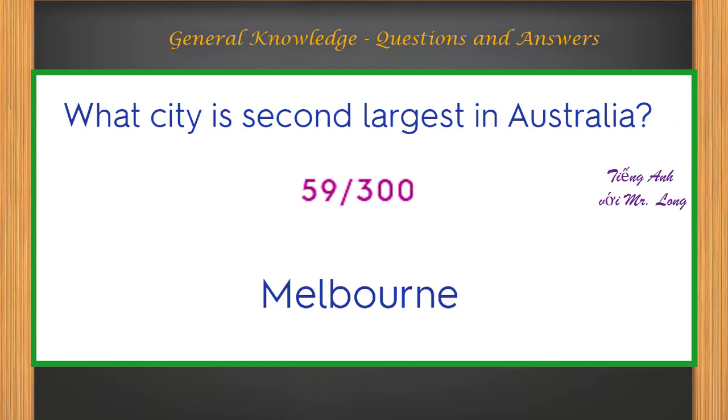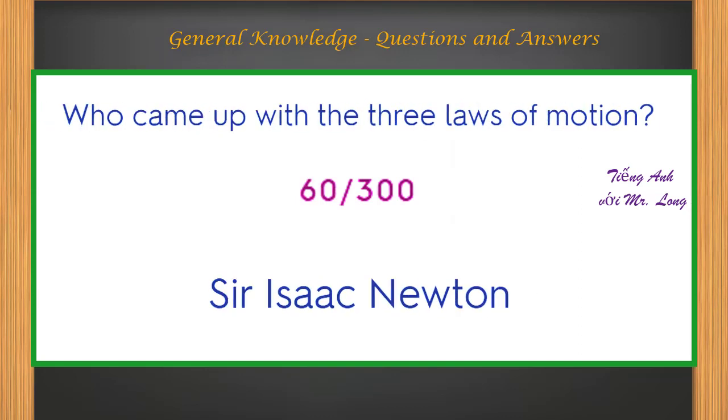What city is second largest in Australia? Melbourne. Who came up with the three laws of motion? Sir Isaac Newton.